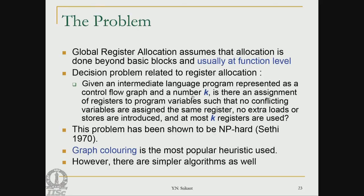A popular heuristic called graph coloring is used to solve this problem, though many other simpler algorithms exist. The difficulty arises when there are very few registers and we must intelligently assign variables — some variables cannot be assigned registers and must remain in memory. In graph coloring, the colors are the registers; we construct a conflict graph and apply reduction on it to achieve coloring. We will stop here and continue with graph coloring in the next lecture.